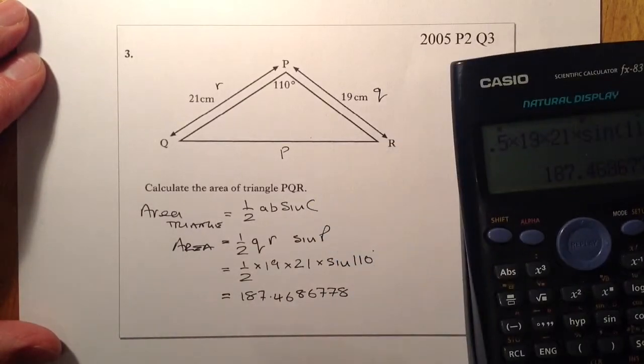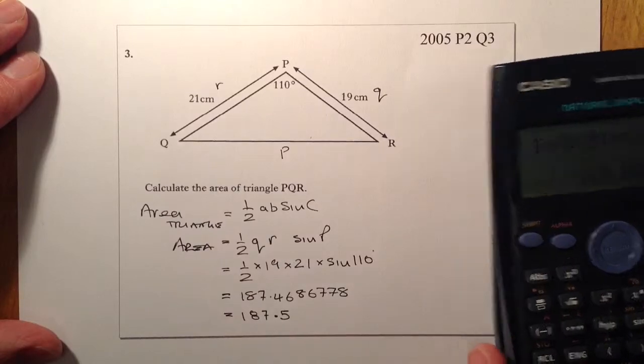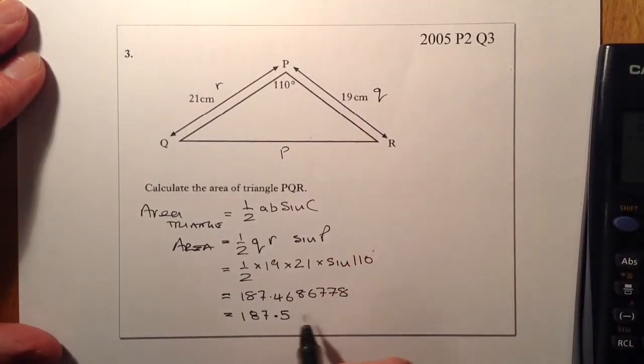So I'm just going to round that to one decimal place, and that'll be 187.5. And we're working in centimetres, so that'll be centimetres squared.